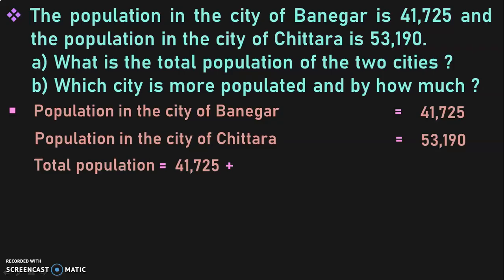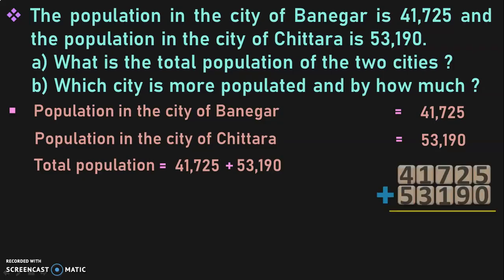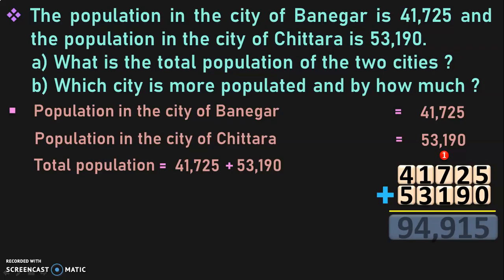We add 41,725 plus 53,190. Begin the addition from the one's place: 5 plus 0 is 5. 2 plus 9 is 11 — write 1, carry over 1. 1 plus 7 is 8, plus 1 carried is 9. 1 plus 3 is 4. And 4 plus 5 is 9. So the sum of these two five-digit numbers is 94,915. The total population is 94,915.